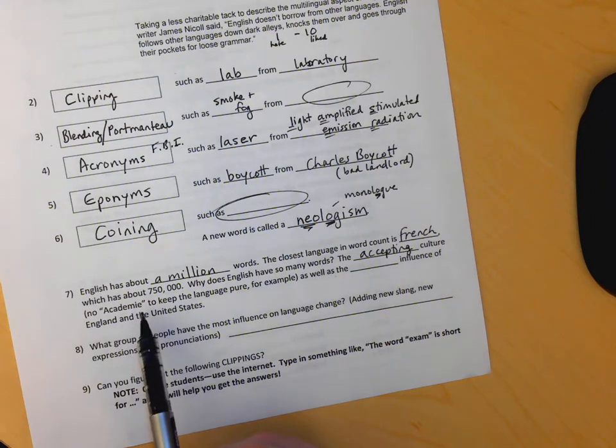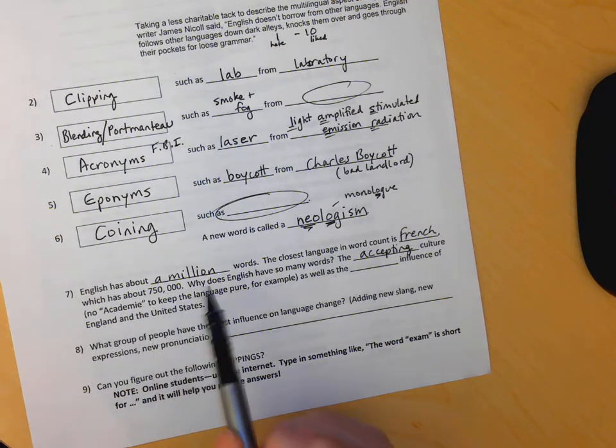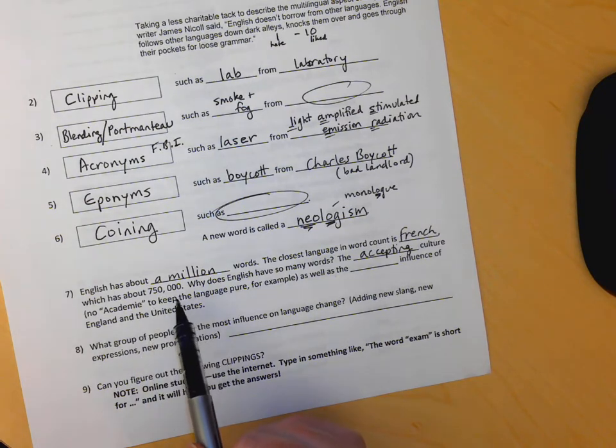The Navajo Nation has a group that watches over the Navajo language to make sure that it's not being corrupted, to keep their traditions pure, which is just fine. English has not been like that. We're just like, bring it on.